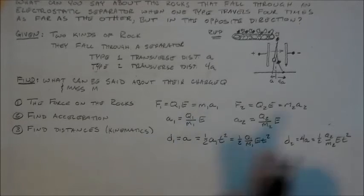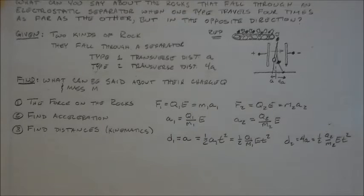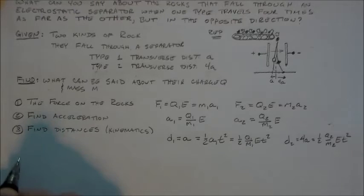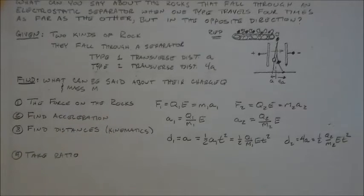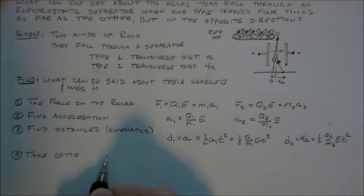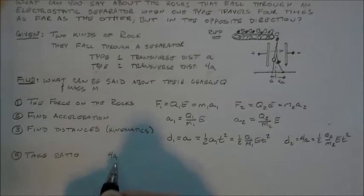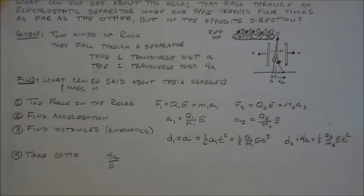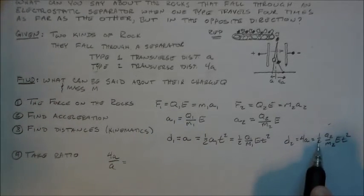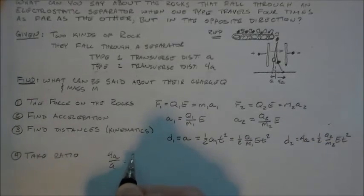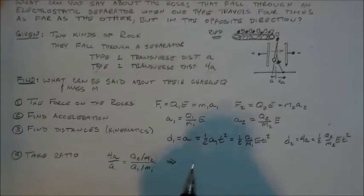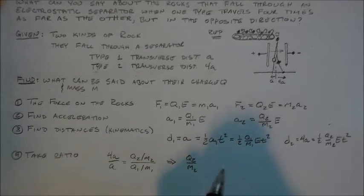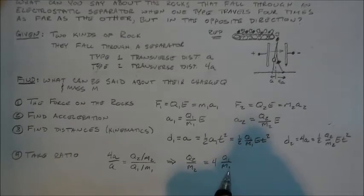So I've got these two distances. I know what, and I can relate them through this a. So in fact, I could, and what I propose to do is just take the ratio. So if I take the ratio, that would be 4a over a is equal to, one half's will cancel, e's and t's will cancel. So I have q2 over m2 over q1 over m1. And so that means that the charge to mass ratio of two is equal to four times the charge to mass ratio of one.